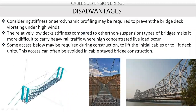Now the disadvantages. Aerodynamic profiling may be required to prevent the bridge deck vibrating under high wind. The relatively low deck stiffness compared to other non-suspension bridge types makes it more difficult to carry heavy rail traffic where high concentrated live loads occur. Some scaffolding may be required during construction to lift the initial cable or back units, though this can often be avoided in cable-stay bridge construction.